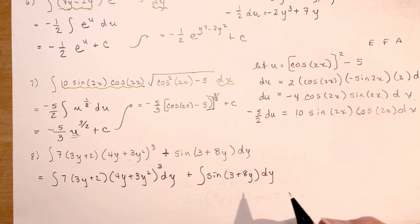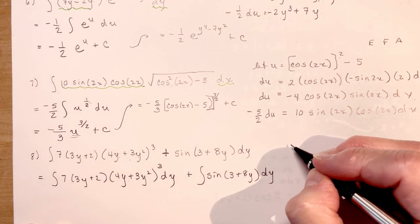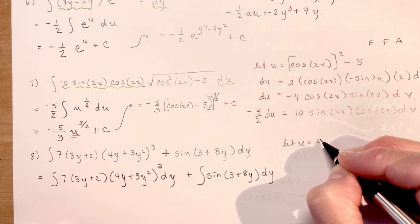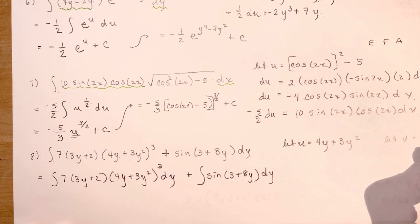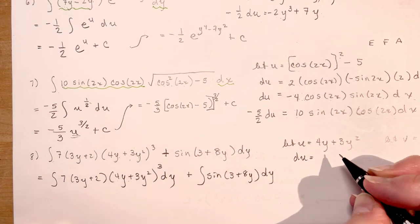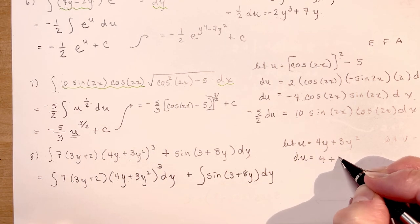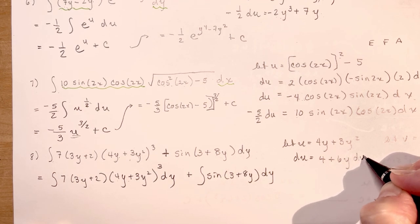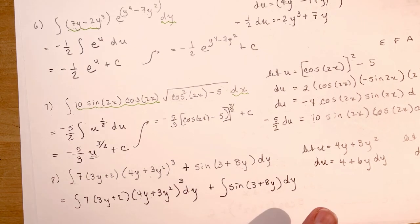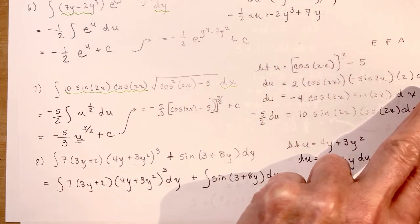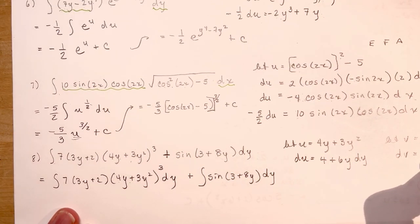For the first part I'll let u equal 4y plus 3y squared, and for the second part I'll let v equal 3 plus 8y. So du is going to be 4 plus 6y dy, and dv is going to be 8 dy, since the derivative of 3 is 0 and the derivative of 8y is 8.